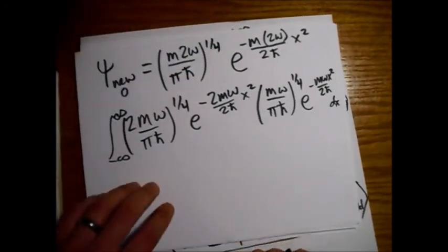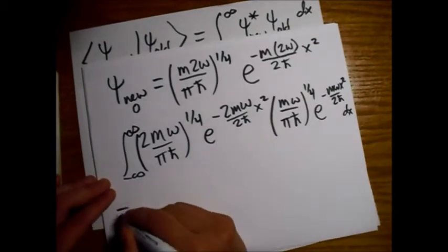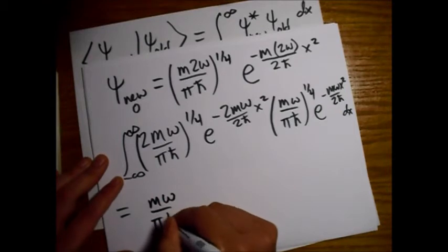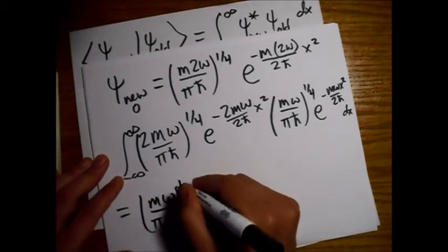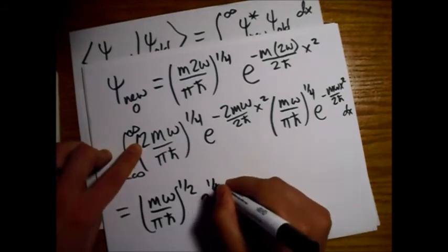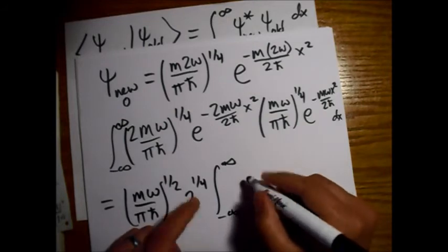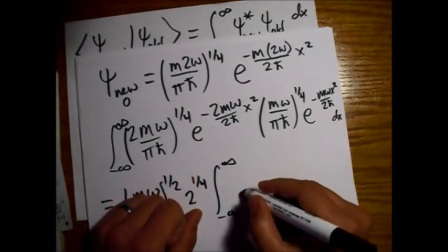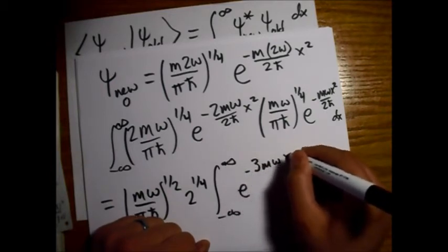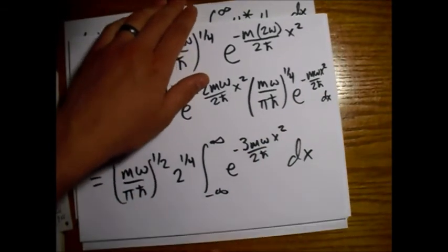Now we put in our old wave function, which is just without the 2. And integrate by dx, right? So here's the old one. That's where we got that from, right here. Alright. So we can do this. Let's see what we got here. So bringing some of the constants out front, we will have an m omega over pi h bar. And this is now 2 to the 1/2. And we still have this factor of 2. And that's still to the 1/4.